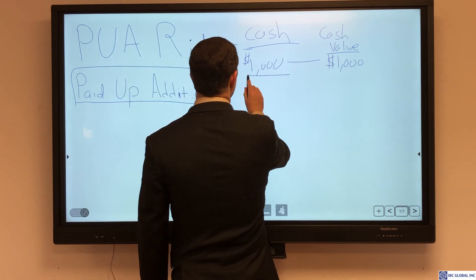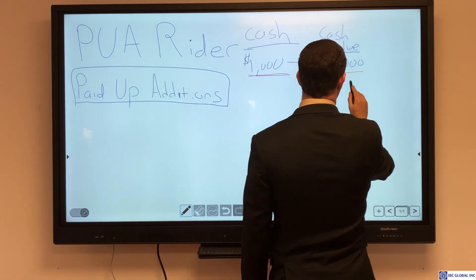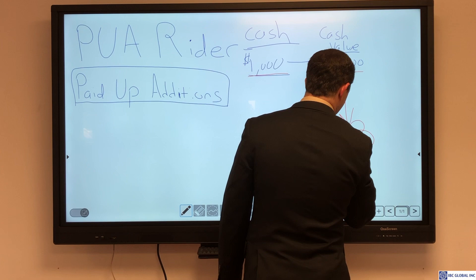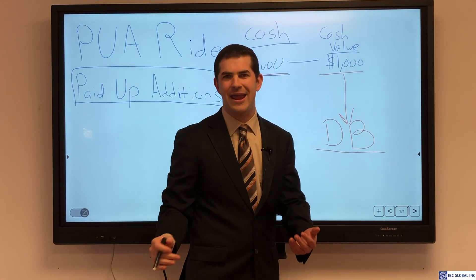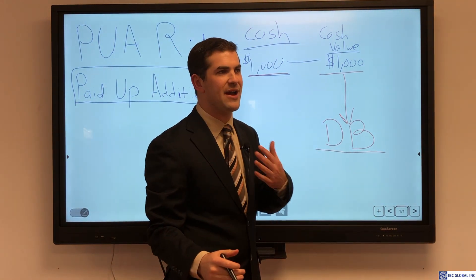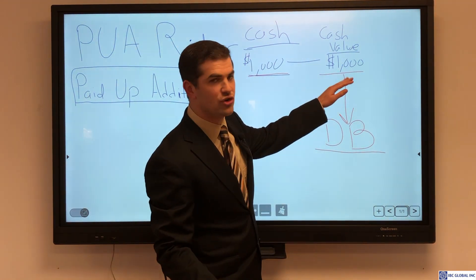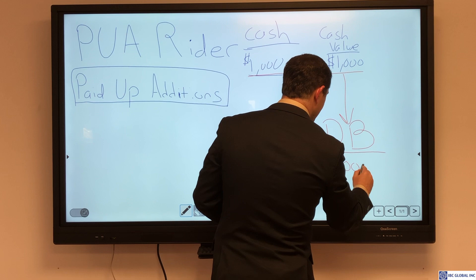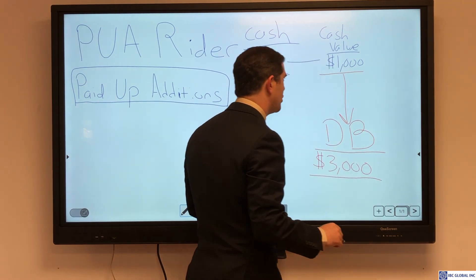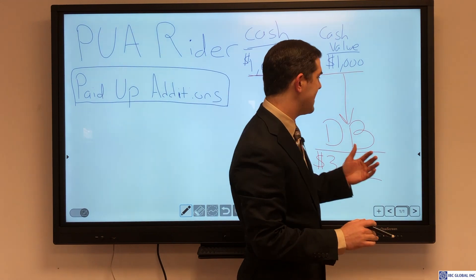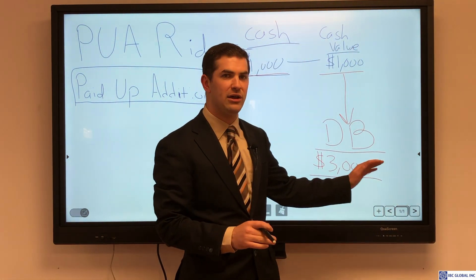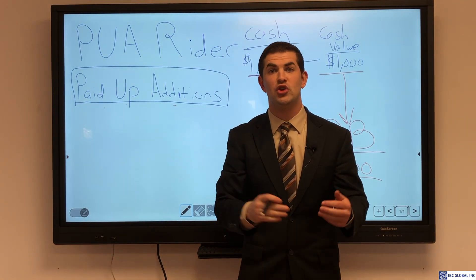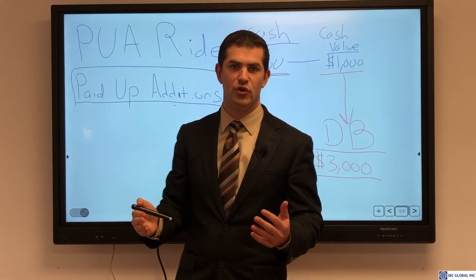Why is it called paid up additions? When you dump in a thousand dollars, yes it goes into cash, but it also buys more life insurance. DB represents death benefit. This does depend on age, but typically if you pay in a thousand dollars into cash, that will buy another three thousand dollars of death benefit — or more precisely, that thousand dollars purchases another three thousand dollars of paid up additional life insurance.